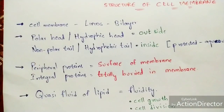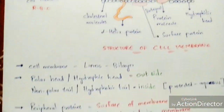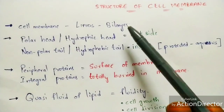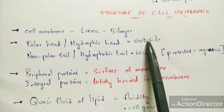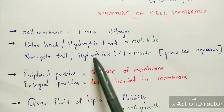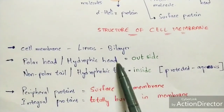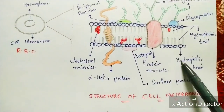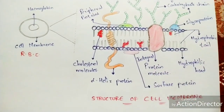Coming to the theory explanation: the cell membrane consists of a lipid bilayer. Within that lipid bilayer, there is a polar head — also called the hydrophilic head — which is exposed towards the outside of the cell, and a non-polar tail — also called the hydrophobic tail — which is exposed towards the inside of the cell.